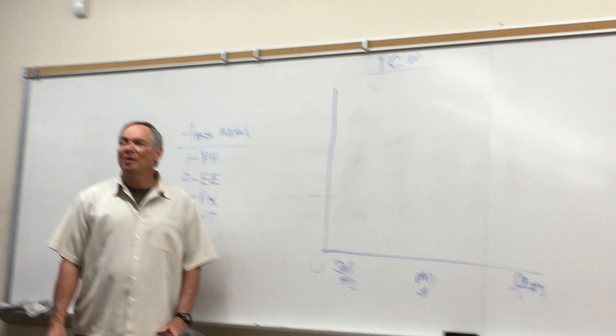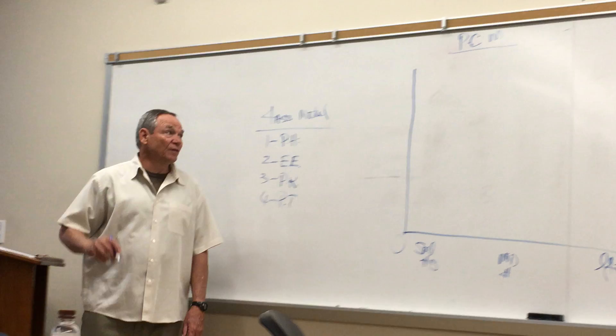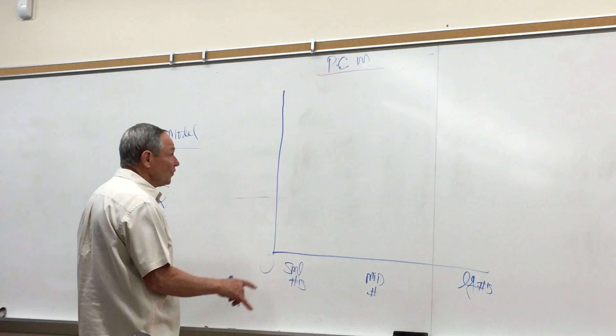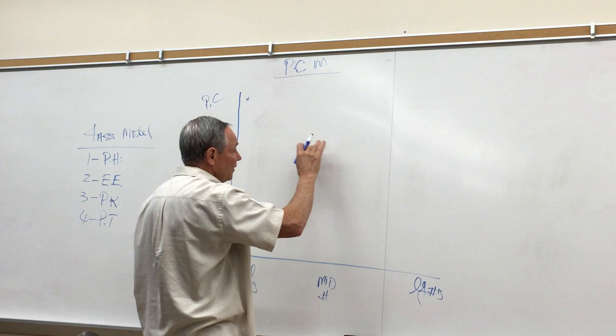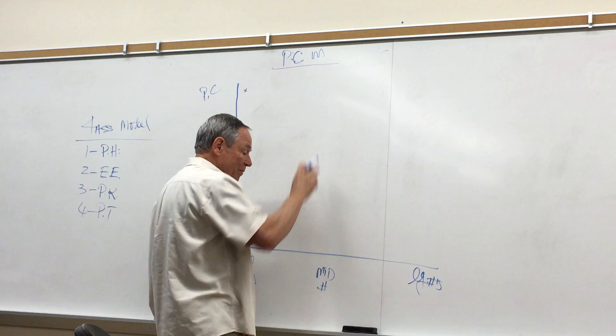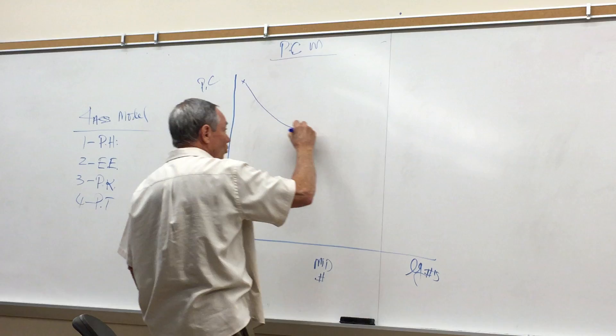We'll find that every firm has this same basic shape for what is called the average total cost function. When a firm starts to produce, it's pretty inefficient, so price and cost are high. As a firm produces more and more, it gets more efficient. Then finally at some point it's maximally efficient, and past that point it starts to go up. This gives us a bowl-shaped average total cost function.